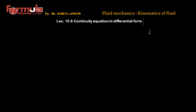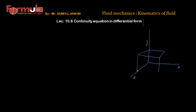Let's suppose we are considering a fluid element — actually, this is not an element, it is a parallelepiped. This is the X, Y, and Z direction, and we are considering a parallelepiped. The respective dimensions of this parallelepiped are: DX in the X direction, DY in the Y direction, DZ in the Z direction. So the volume of this parallelepiped is DX·DY·DZ.